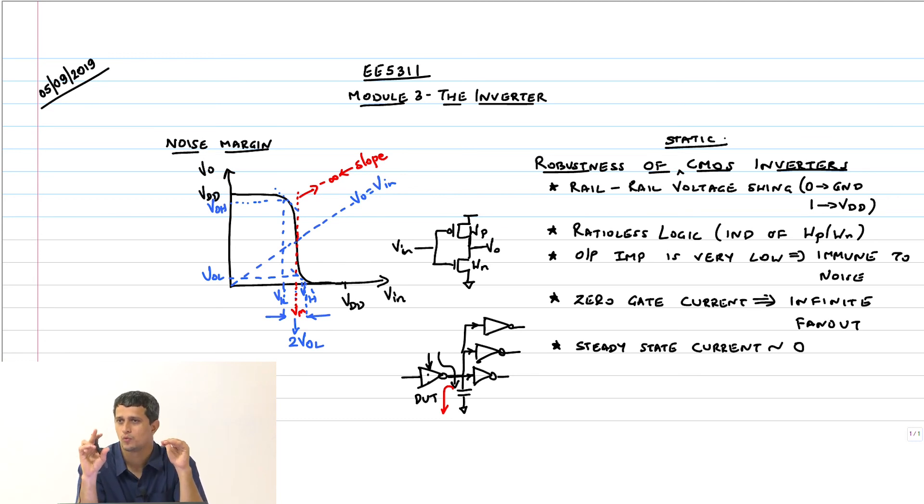Here the static refers to being driven to supply or ground through a low resistance path which means that as long as power is on that logic state will remain forever. Of course, if we take the power off you lose it. With that we conclude the discussion on robustness, noise margin and other aspects of the static CMOS inverter.